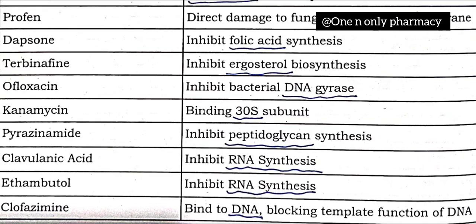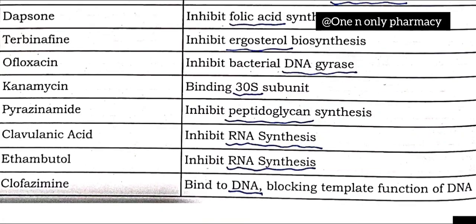Pyrazinamide inhibits peptidoglycan synthesis. Clavulanic acid inhibits RNA synthesis. Ethambutol inhibits RNA synthesis. Clofazimine binds to DNA, blocking its template function. These are about 15 to 20 drugs and their mechanisms of action for a quick revision.